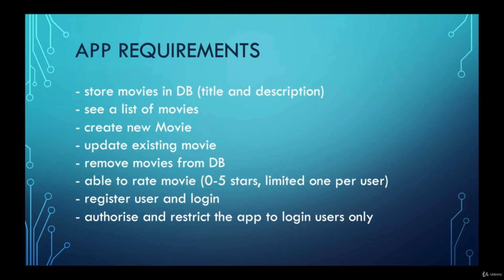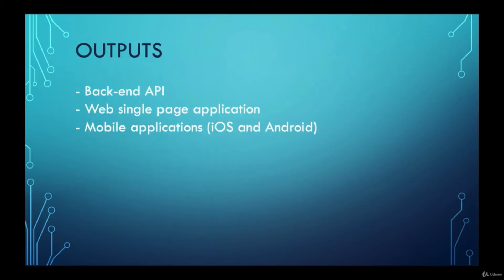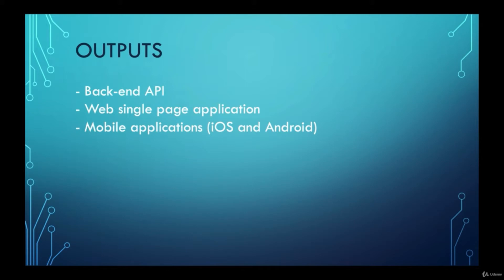That's our requirement for our application and we will be developing all of that during this tutorial. The outputs need to be three: we need to create a backend API that will handle and store all our data in the database. We'll also need a web application which needs to be a single page application - that means we're not going to reload our page, we'll load dynamic content and stay on the same page. And we need to create a mobile application for iOS and Android using a cross-platform solution based on the same framework as the web single page application.